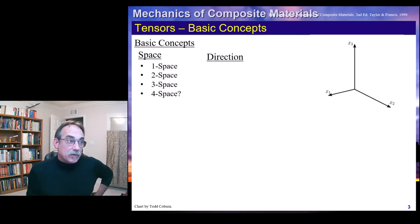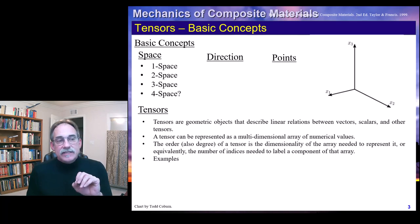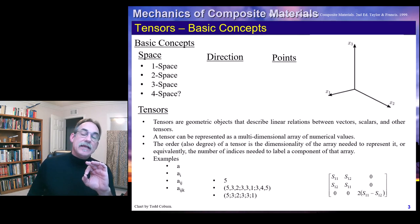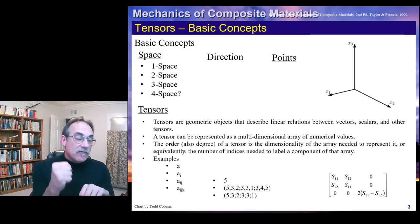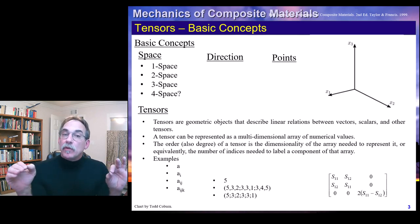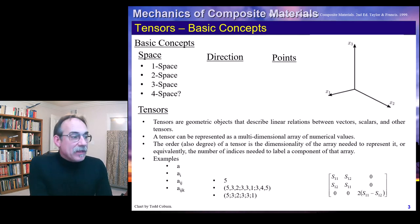When we talk about three space, we use terms like direction and points. We can take two points and define a direction, as we saw in statics. We're going to be dealing with tensors — just a tool that engineers use to keep track of multi-directional space. A scalar A has a single value. We can use A with one index to indicate a vector — a one-dimensional, two-dimensional (Aij), or three-dimensional (Aijk) vector, and so forth.